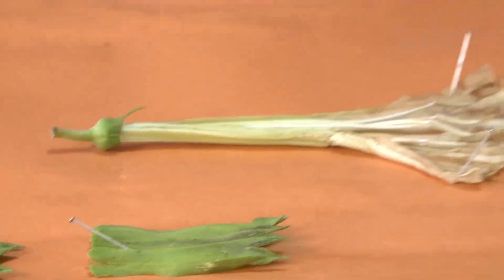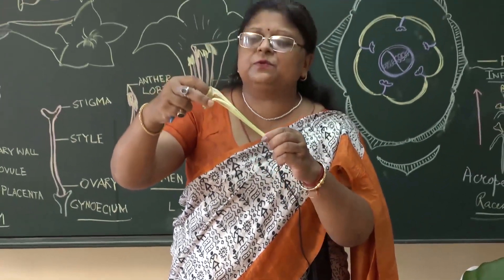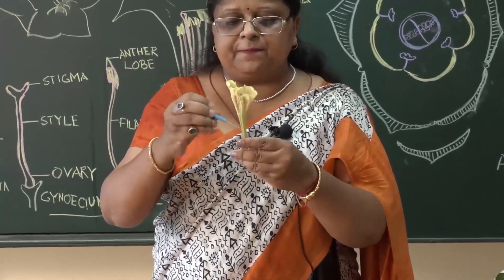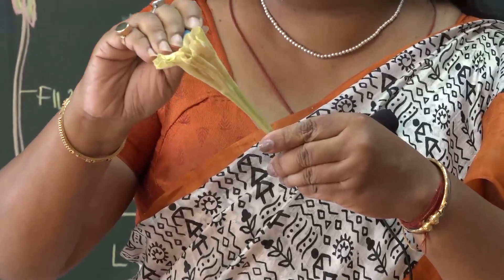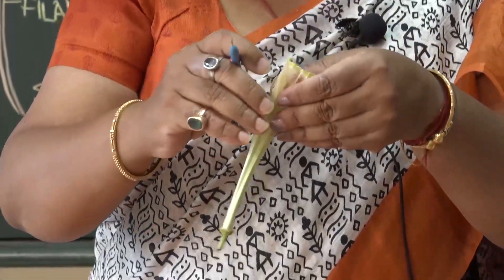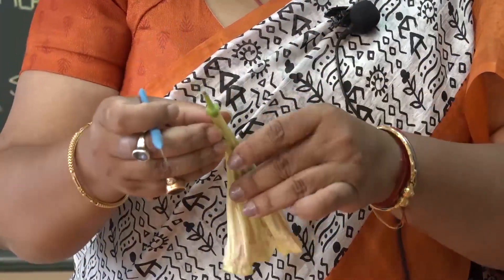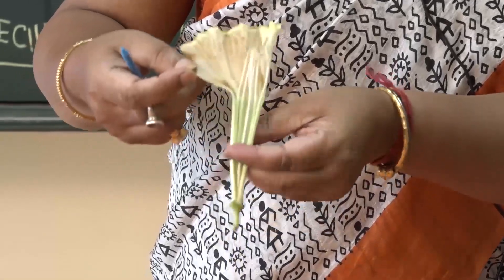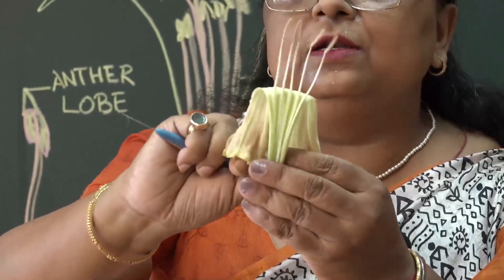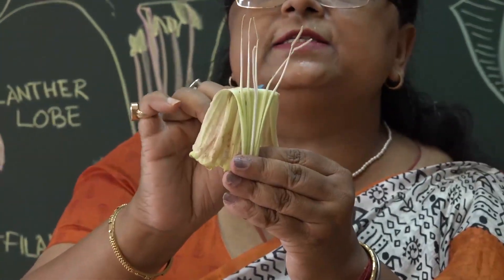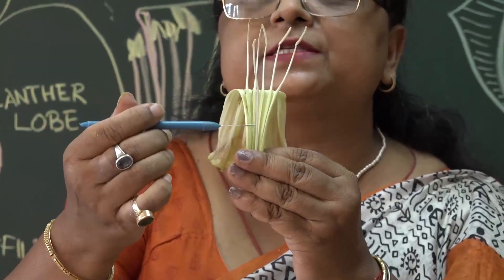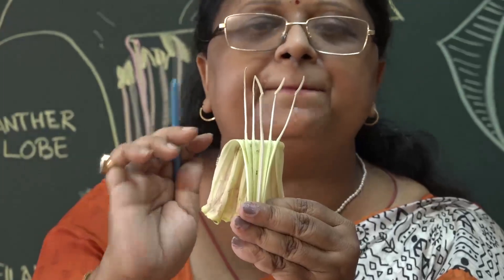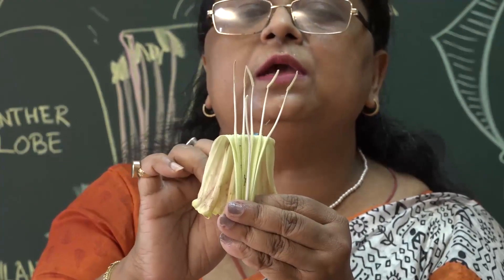What we are left with is the corolla tube, and now the bell shape becomes prominent. Let us open it up. One has been opened and we are showing the longitudinal section (LS) of the flower — a vertical section which reveals two things. Look at the nature of the anthers: the androecium is fixed with the calyx near the base. This condition is known as epipetalous. There are 1, 2, 3, 4, 5 anthers — so 5 anthers in total, all fixed near the base.